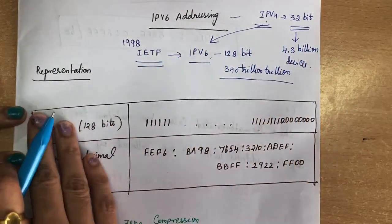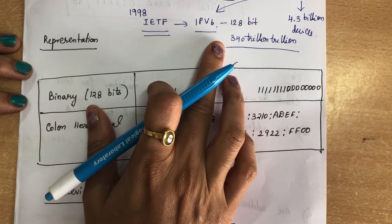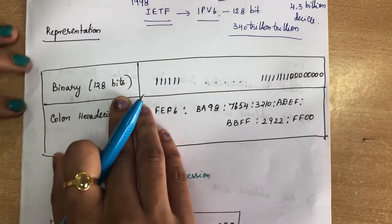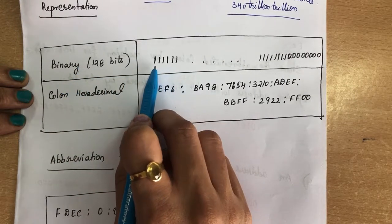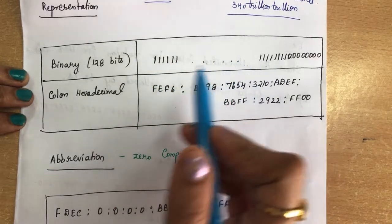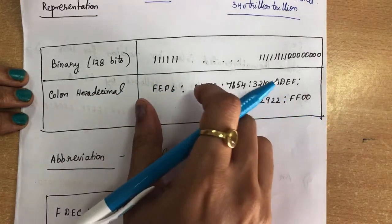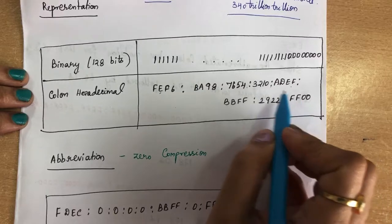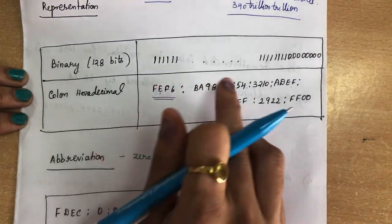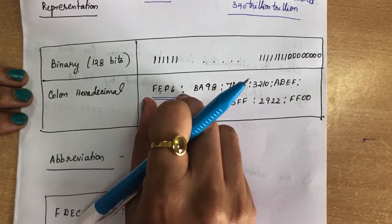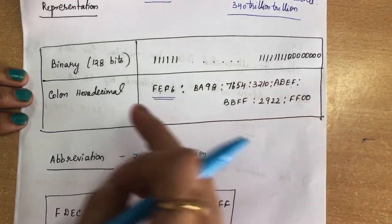Computers normally store addresses in binary, but since IPv6 is 128 bits it cannot be easily handled by humans, so several notations have been proposed. The first is binary representation, where you represent the 128 bits as zeros and ones. The second is hexadecimal notation, also called colon-hexadecimal, where the address is divided into eight sections, each made of four hexadecimal digits, and they are separated by colons.